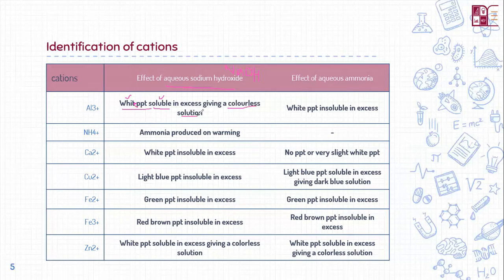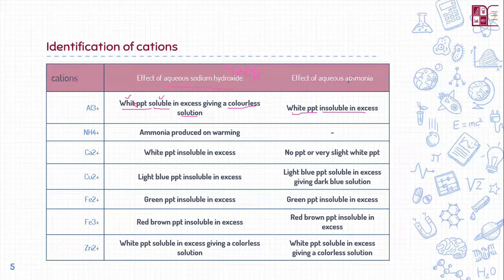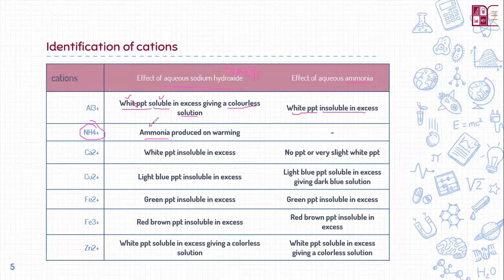However, when aluminum is added to aqueous ammonia (NH3), it forms white precipitates but they are insoluble in excess — meaning the white precipitates remain and do not form any kind of solution, even when excess ammonia is added. For the ammonium ion, when aqueous sodium hydroxide is added and the mixture is warmed up, ammonia gas is produced. The aqueous ammonia test is not applicable here because you cannot mix ammonium ion with aqueous ammonia.